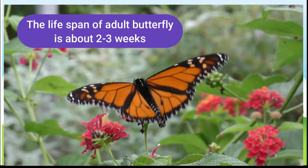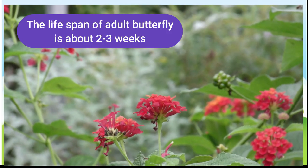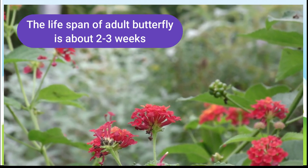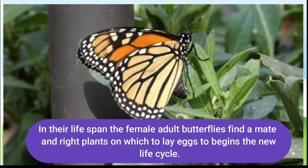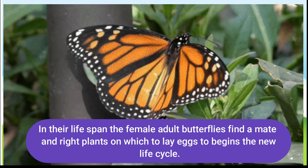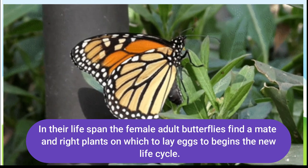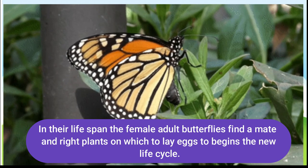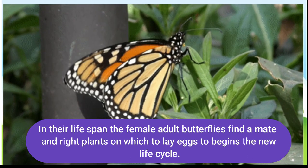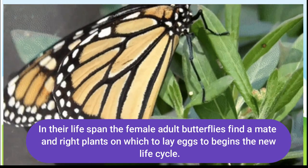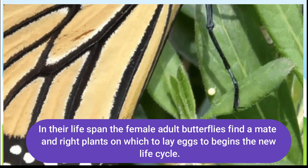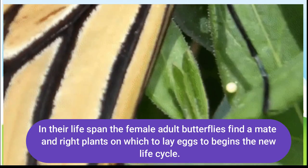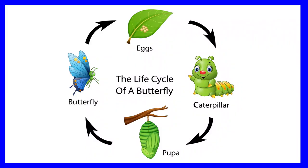The lifespan of adult butterflies is about two to three weeks. During their lifespan, female adult butterflies find a mate and the right plant on which to lay eggs, beginning the new life cycle. In this way, the life cycle continues. This is the complete life cycle of a butterfly.